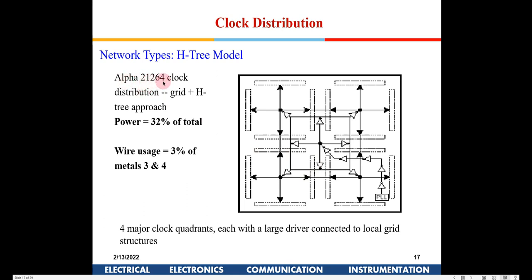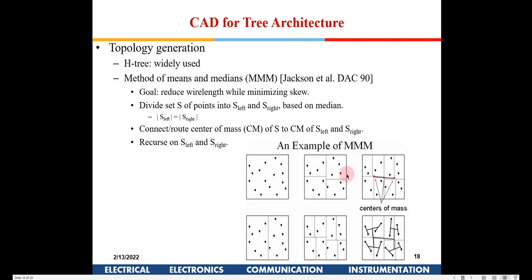These are the issues with the H-tree model. As a real-world example, the Alpha 21264 microprocessor uses an H-type clock distribution network. It uses about three percent of metal layers three and four for clock distribution, and the total clock distribution power is 32 percent of the total power — which is on the higher side for this processor.